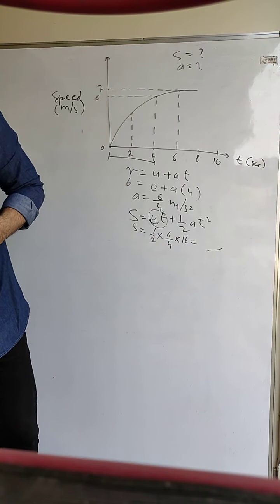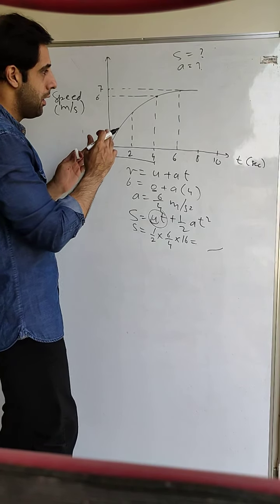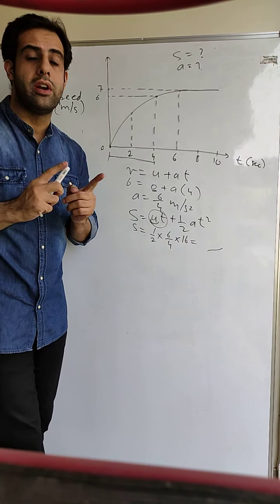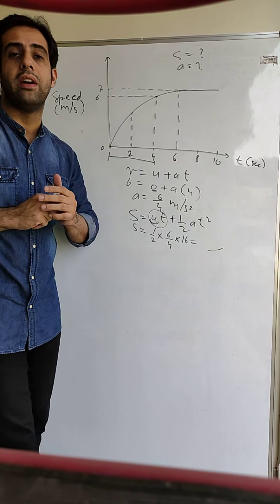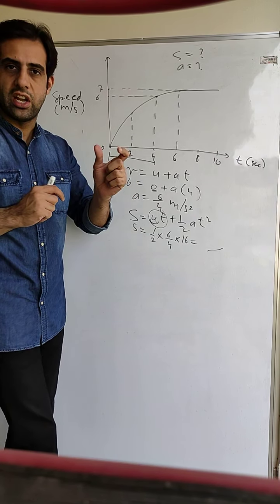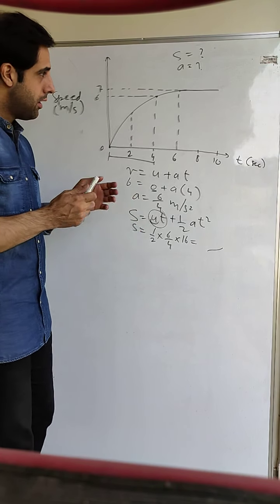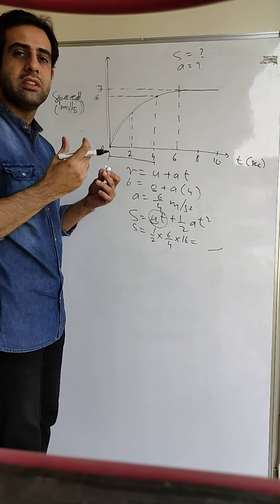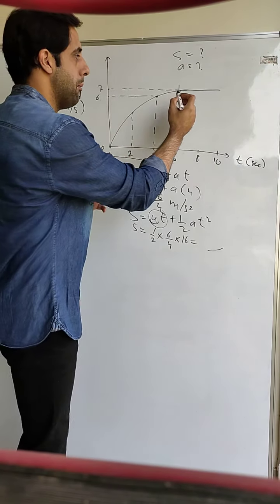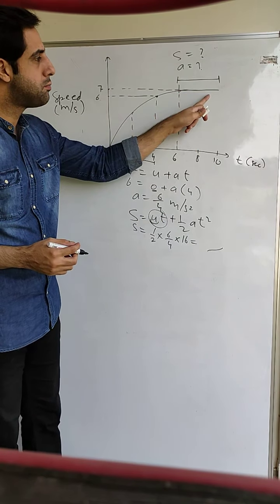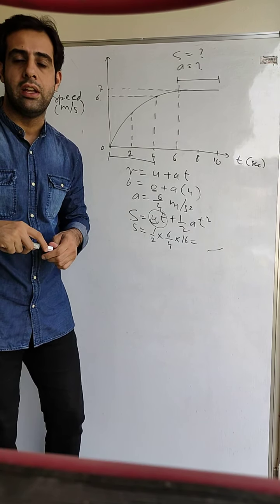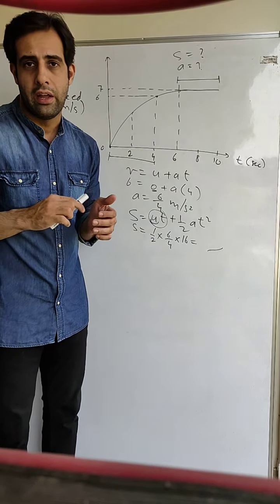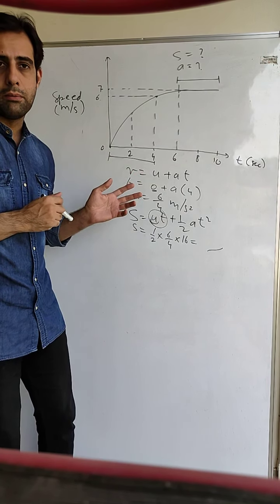The second part of the question asks: which part of the graph represents uniform motion? Uniform motion means equal distances covered in equal intervals of time, which happens only when speed is constant. From the start to a certain point the line is curved — that means non-uniform acceleration and changing speed. But after that point the speed is not changing — it is constant. That region represents uniform motion where the body travels equal distances in equal intervals of time.